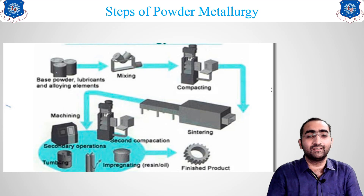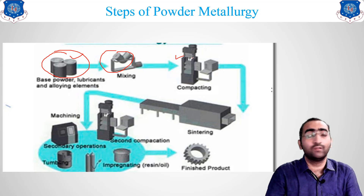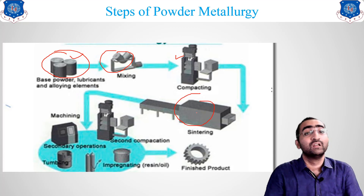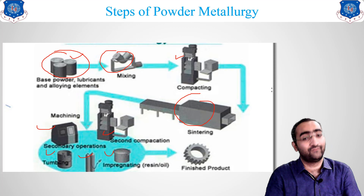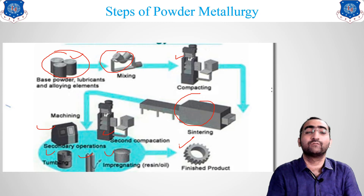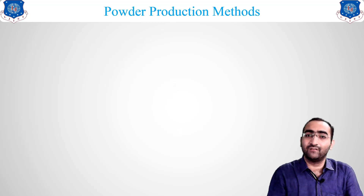Looking at the flow sheet visually: we take the additives and the powder for our desired final product, then go for the mixing stage. After mixing, the machine compresses the material. This is followed by the sintering furnace, where heating takes place. Then secondary operations can be applied, and the final product — for example, a gear — is obtained. This is the basic flow sheet and route followed for manufacturing powder metallurgical products.